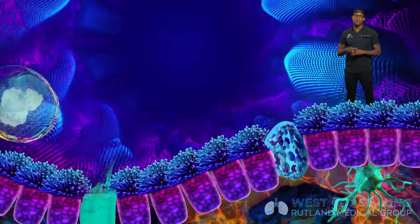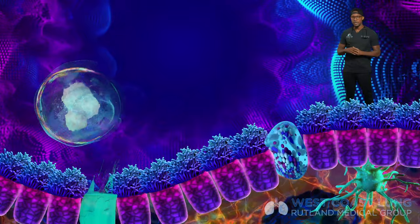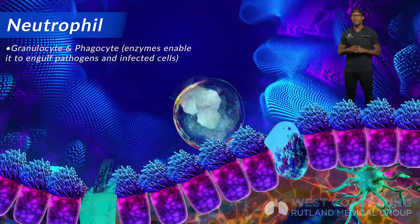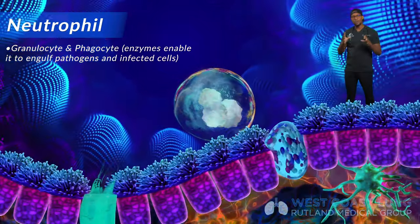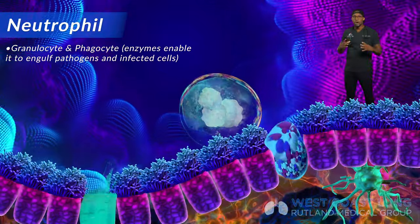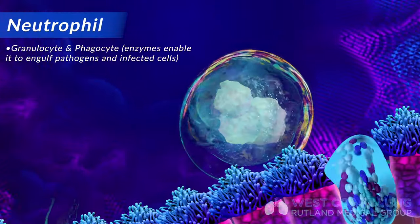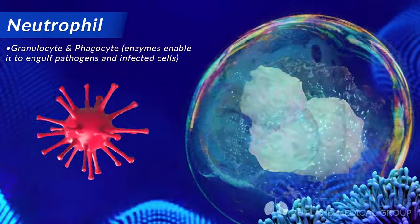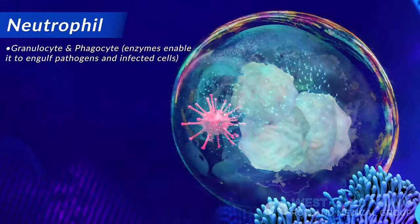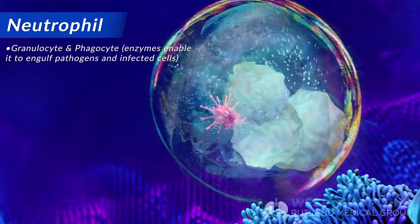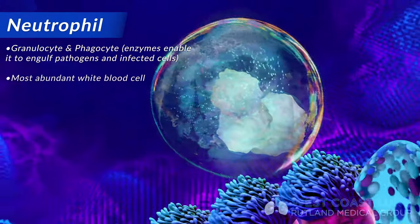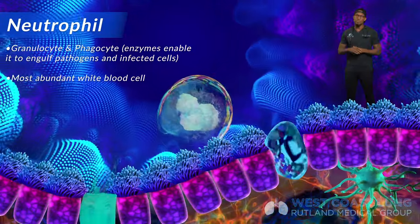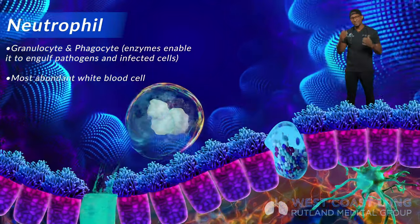The first type of white blood cell involved in innate immunity is the neutrophil. The neutrophil is a granulocyte — it's a phagocyte, a type of white blood cell that's going to eat or engulf bacteria, fungi, or cells that are infected by viruses. It has special enzymes within its structure that give it the ability to engulf cells. It's also the most abundant white blood cell in your bloodstream, making neutrophils very important in innate immunity as they're first on the scene.